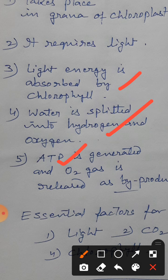Jab difference aayega light phase aur dark phase mein, to pehle to yeh batana hai ki light phase grana mein hota hai, light phase mein light ki zaroorat padti hai, aur uske baad events batane hain: light energy is absorbed by chlorophyll, then water is splitted into hydrogen and oxygen, and then ATP is generated and oxygen gas is released as by-product.